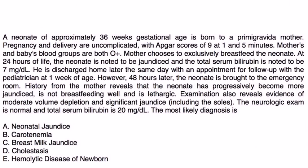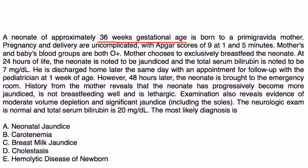Now let's take a look at a couple of vignettes. A neonate of approximately 38 weeks gestation is born to a primigravid mother. Pregnancy and delivery are uncomplicated, with APGAR scores of 9 at 1 minute and 5 minutes. Mother's and baby's blood groups are both O positive. Mother chooses to exclusively breastfeed the neonate. At 24 hours of life, the neonate is noted to be jaundiced, and total serum bilirubin is noted to be at 7. He is discharged home later the same day with an appointment to follow up within one week with the pediatrician. However, 48 hours later, the neonate is brought to the emergency room. History from the mother reveals that the neonate has progressively become more jaundiced, not breastfeeding well, and is lethargic. Exam also reveals evidence of moderate volume depletion and significant jaundice, including the soles. Neurologic exam is normal. Total serum bilirubin is 20, most likely diagnosis is.